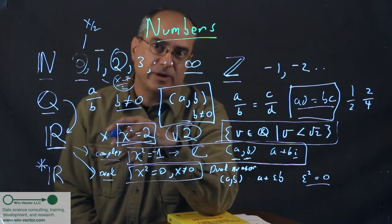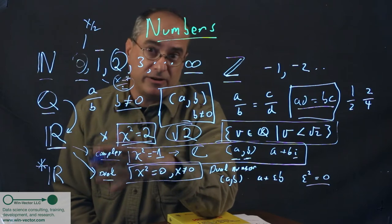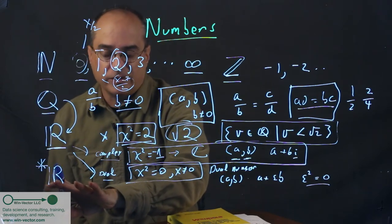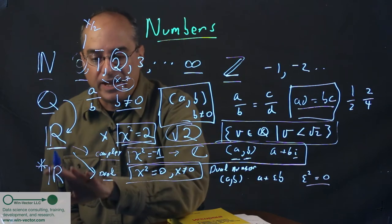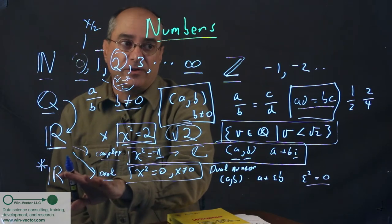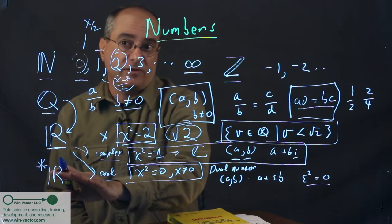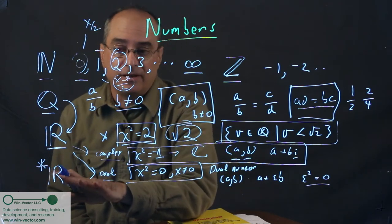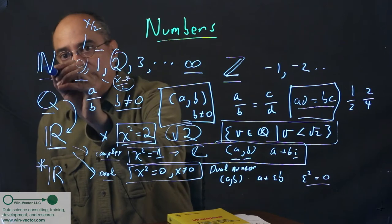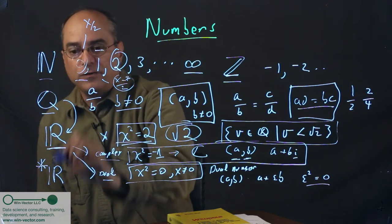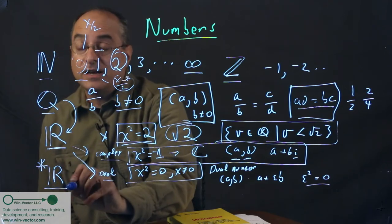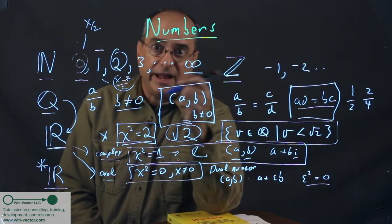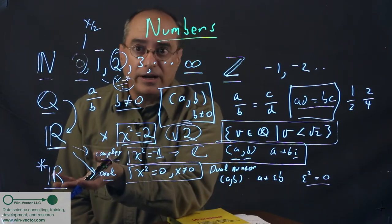Robinson's hyperreals are non-standard reals. So these are called the non-standard reals. And they add infinitesimals back into the real number system so that we can do calculus without having to take limits. And so we have basically at least four—this, again, is a very exotic number system. This is only invented in the 1960s, and it is only taught to specialists.